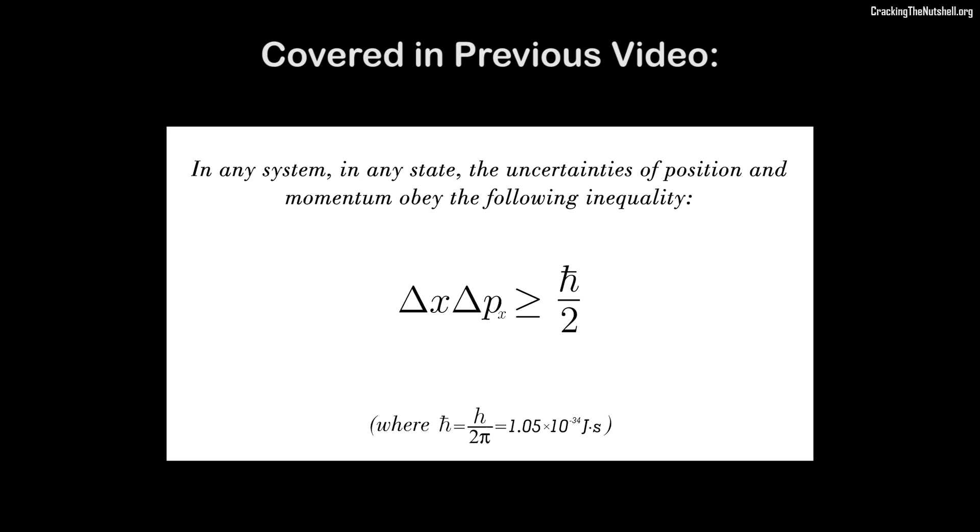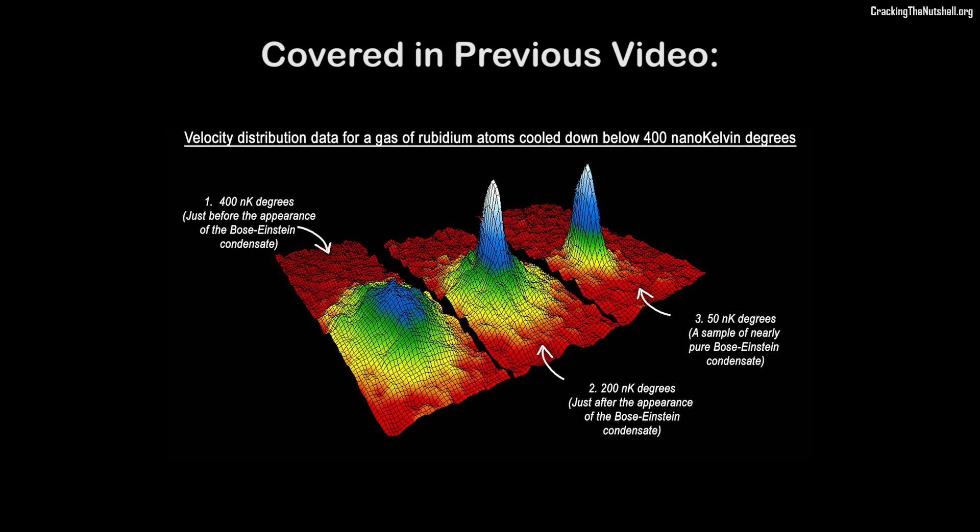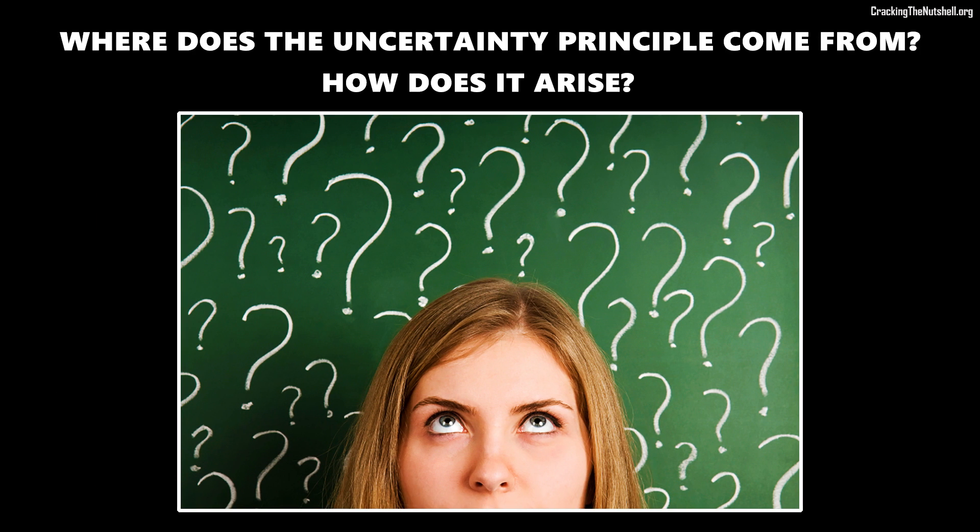In my previous video, I introduced Heisenberg's Uncertainty Principle. I performed a little home experiment, covered some theory, and used examples to show you how the Uncertainty Principle works in real life. However, I am sure many of you were left wondering, where does the Uncertainty Principle come from? How does it arise?